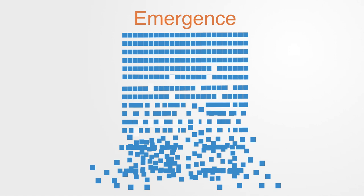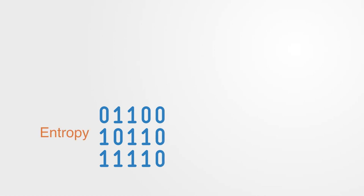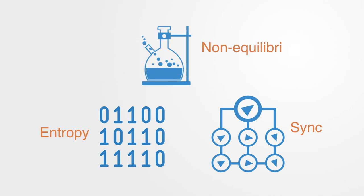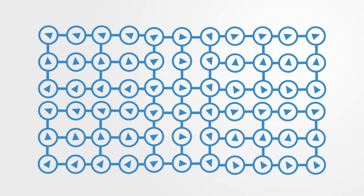The theory of self-organization presents a number of concrete models for understanding how this process takes place. The model of self-organization draws upon information theory to understand organization in terms of information and entropy. It draws upon ideas in physics surrounding synchronization and pattern formation and ideas in chemistry surrounding dissipative systems and far-from-equilibrium processes.